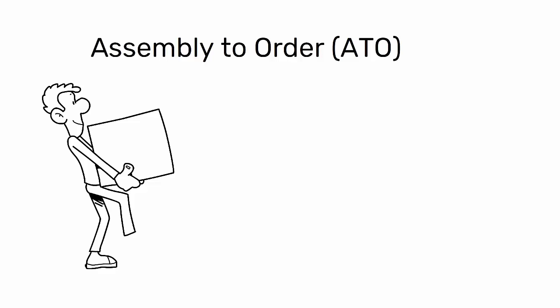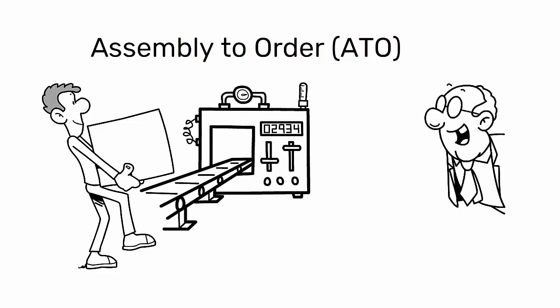Assembly to order, ATO, is a production strategy where products are assembled upon receipt of a customer's order.